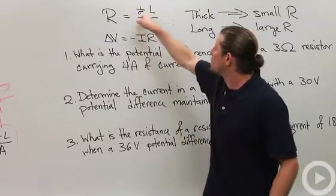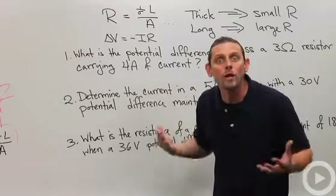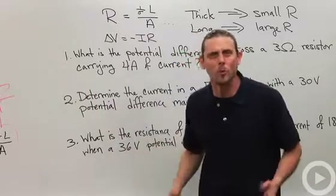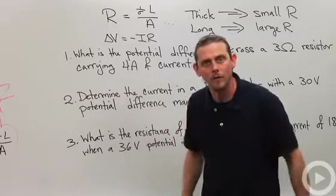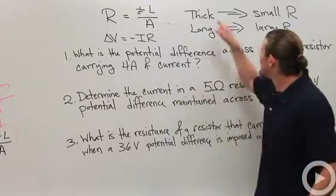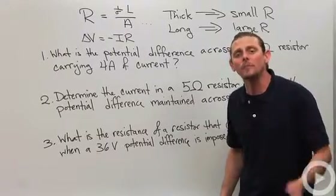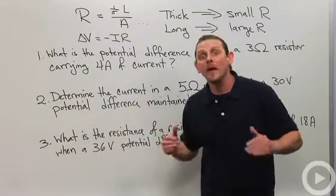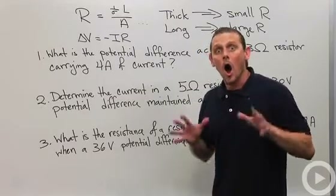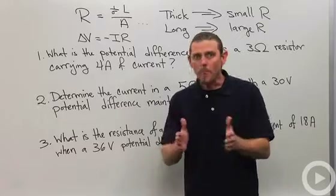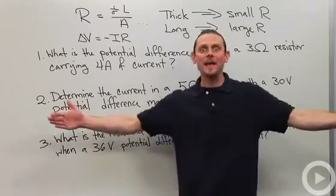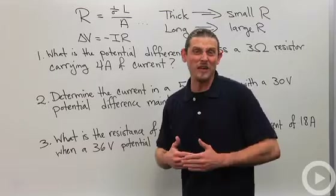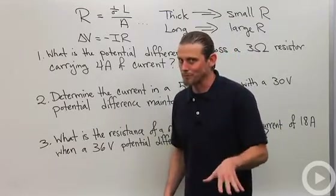The nice thing about resistivity is that it depends only on the material — not on how big or long the wire is, or any geometrical properties. It only depends on what the wire is made of. So a thick wire with a large cross-sectional area gives a really small resistance, while a long wire gives a large resistance. We can think about this in terms of traffic: a thick wire is like many lanes of traffic — easy for people to drive down. A long wire is like a really long road — fewer people will choose that option.